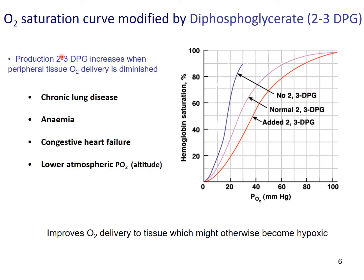Production of 2,3-DPG also increases when oxygen delivery to peripheral tissue is diminished or reduced. That can happen during chronic lung disease when overall ventilation efficiency is compromised, or with anemia when you have fewer erythrocytes, or during congestive heart failure when oxygen supply is reduced due to thrombosis, or at high altitude where PO2 level is lower. Under these conditions, red blood cells respond by producing more 2,3-DPG to shift the oxygen binding curve rightward, providing better oxygen supply to tissues — otherwise tissues could suffer hypoxia and eventually die off.